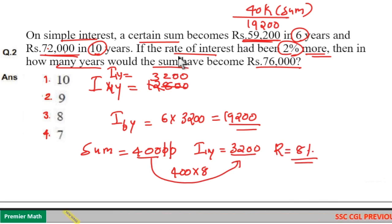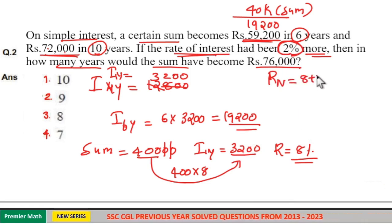If the interest rate had been increased by 2% more, then the new rate becomes 8 plus 2, which is 10%.